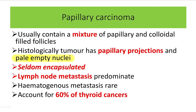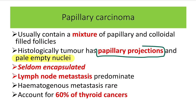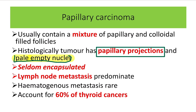Let's examine papillary carcinoma. Papillary carcinoma contains a mixture of papillary and colloid-filled follicles — it is formed by a mixed structure. Histologically, the tumor has papillary projections and pale empty nuclei. Papillary projections are a hallmark of papillary carcinoma, which is how it gets its name. There are also pale empty nuclei.